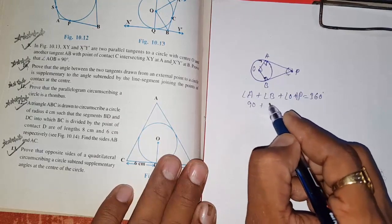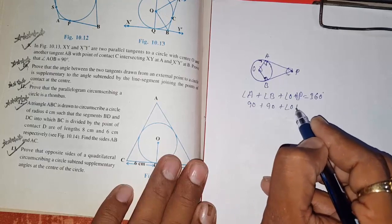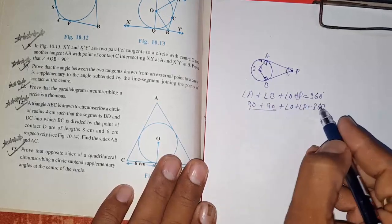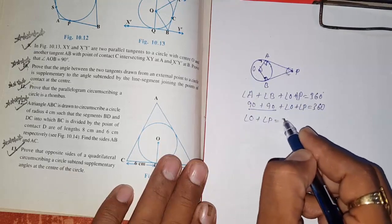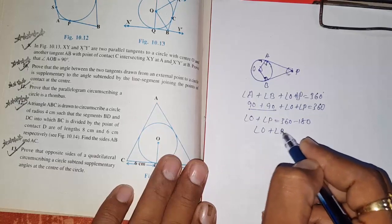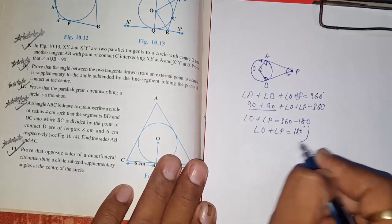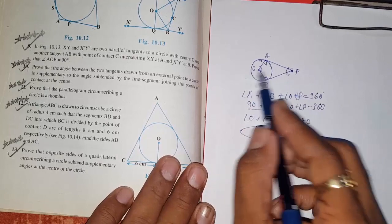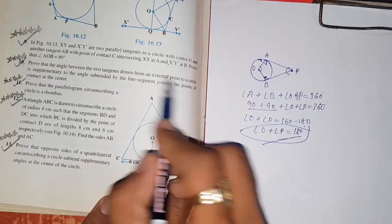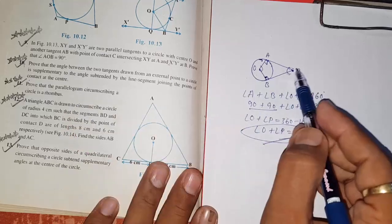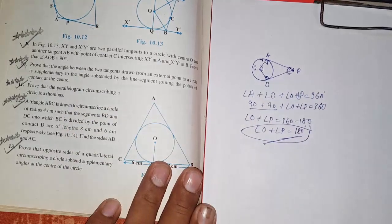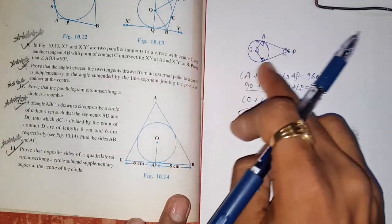Since angle A = 90 and angle B = 90, we write: angle A + angle B + angle O + angle P = 360 degrees (sum of angles in a quadrilateral). Substituting: 90 + 90 + angle O + angle P = 360, so angle O + angle P = 360 − 180 = 180 degrees. The sum of these two angles is supplementary, which is what was to be proved.